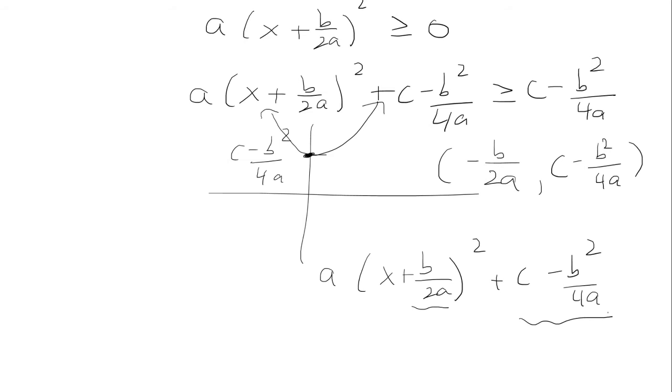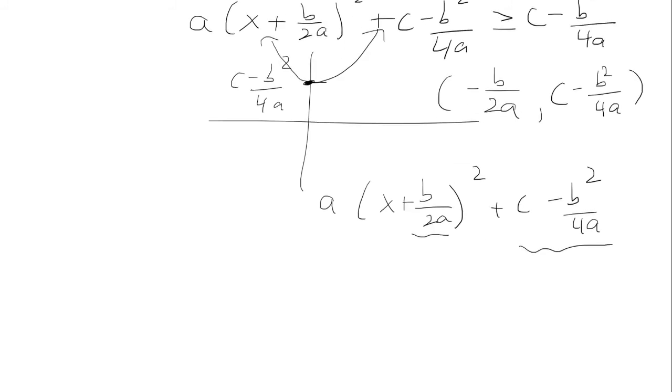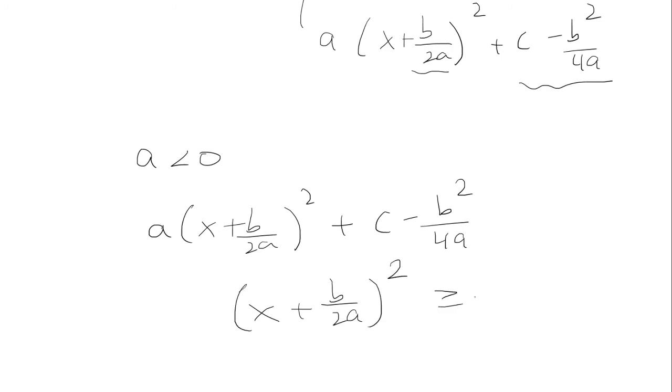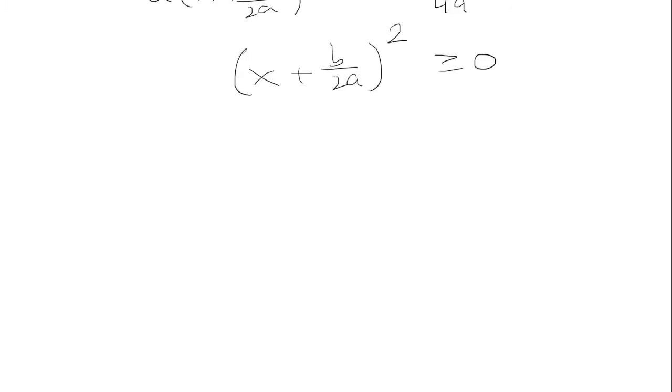So that's assuming that a is positive. What if a is negative? What do we get there? So if we let a be negative, we have a times x plus b over 2a quantity squared plus c minus b squared over 4a. Let's look at x plus b over 2a quantity squared. This is always going to be greater than or equal to 0 since anything squared is greater than or equal to 0.